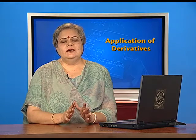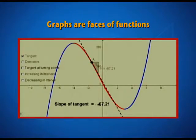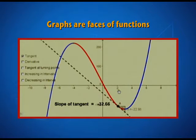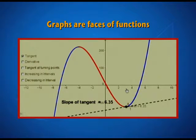Let us take a look at a graph of a function, which as we discussed earlier, speaks a lot about the character of the function. In this graph, we have a point which is free to move along its sketch, and as I move the point A, this tangent also moves along. You just need to keep an eye on the changing slope of the tangent.